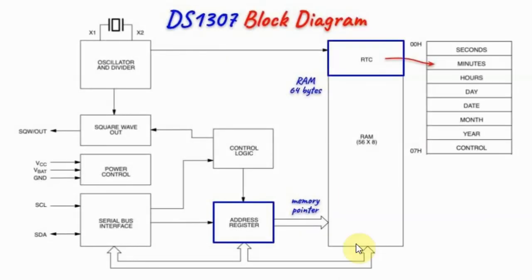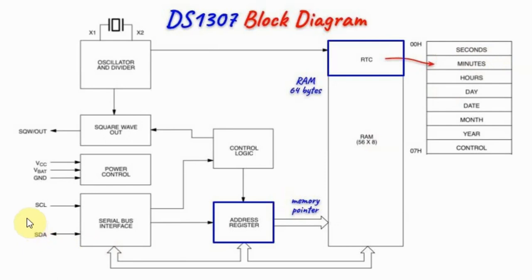As an example, to program the seconds, minutes, and hours of the real-time clock RAM, we first point the pointer to location 00 by sending 00 over the I2C bus to program the address register. The memory pointer now points to the seconds location. We then send the bytes for seconds, minutes, and hours via I2C, and the pointer is auto-incremented after each write operation to point to the next location.